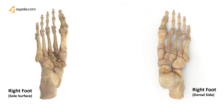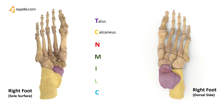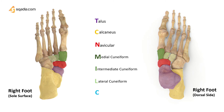Let us look at another mnemonic — we should get all the help we need to remember these bones. This mnemonic is: This Circus Need More Interesting Little Clowns. Here, T for the talus bone, C for the calcaneus, N for the navicular, M for the medial cuneiform, I for the intermediate cuneiform, L for the lateral cuneiform, and C for the cuboid bone.